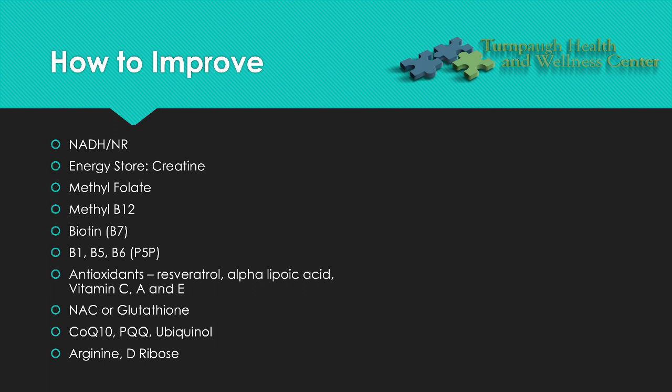Various B vitamins are going to be very effective for the mitochondria: methylfolate, methylated B12, biotin, thiamine, pyridoxine, or pantothenic acid. Using really good antioxidants such as resveratrol, alpha-lipoic acid, vitamin C, vitamin E, vitamin A. Using good precursors for the mitochondria, which are N-acetylcysteine. Your glutathione is crucial for the mitochondria. Then you can get into aspects that are used in the electron transport chain, such as CoQ10, PQQ, ubiquinol — these are all really effective. And using also some other supportive mechanisms such as arginine and D-ribose.